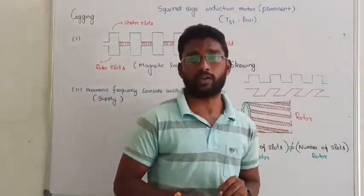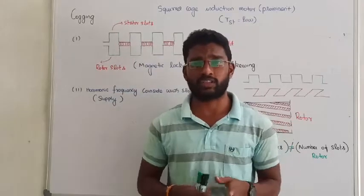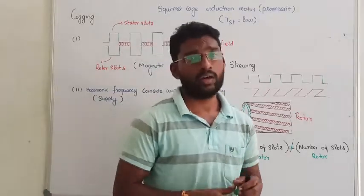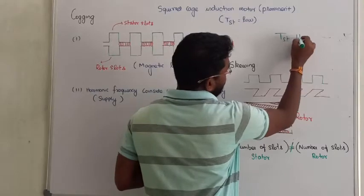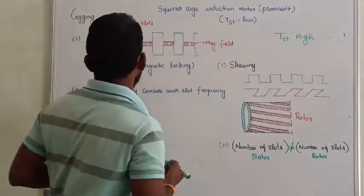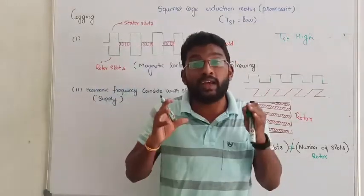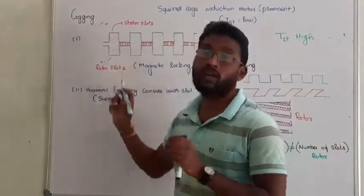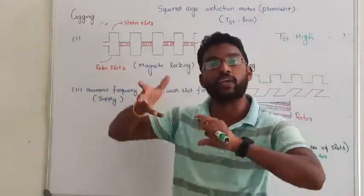In the slip ring induction motor, the starting torque is very high. So in cogging, when we try to start the induction motor, the induction motor fails to start — that is called the effect of cogging.